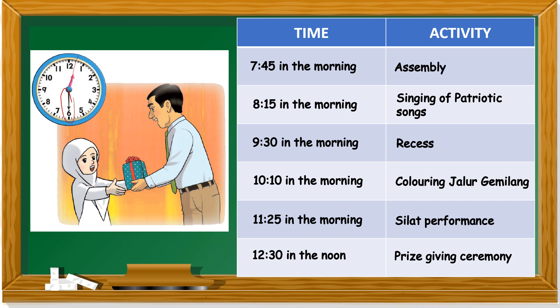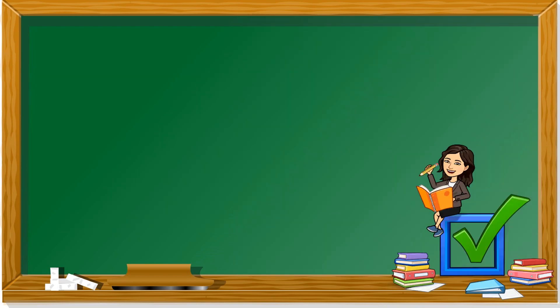Why is she getting a prize? Maybe it's for her coloring. Is it easy to record the time and activities? I hope you understand. Remember to look at the hour hand followed by the minute hand, and you have to write 'in the morning,' 'in the afternoon,' or 'at night.'